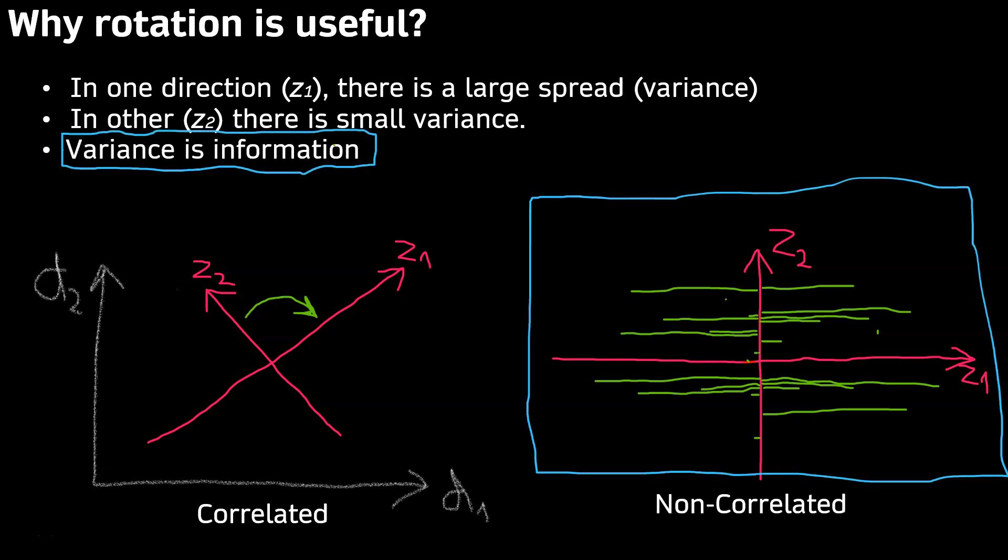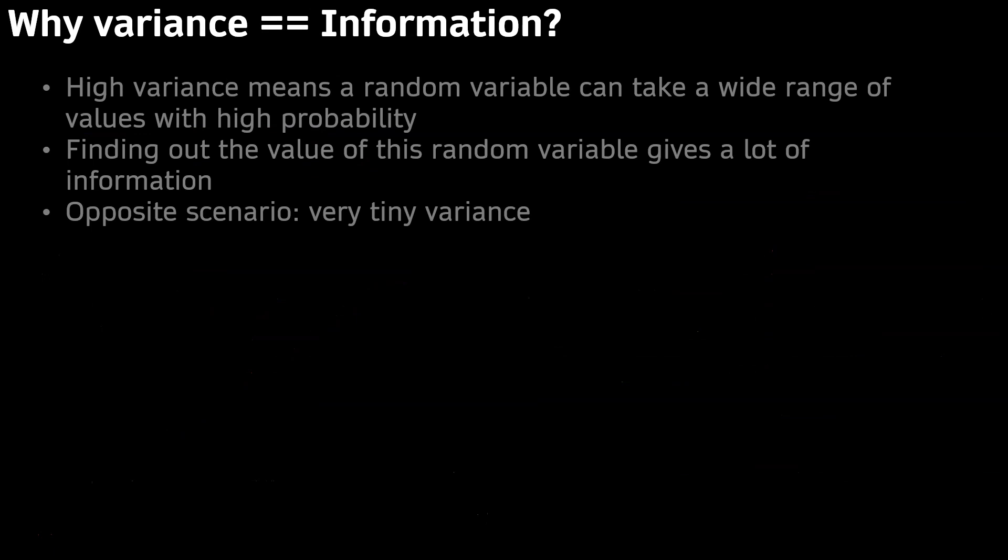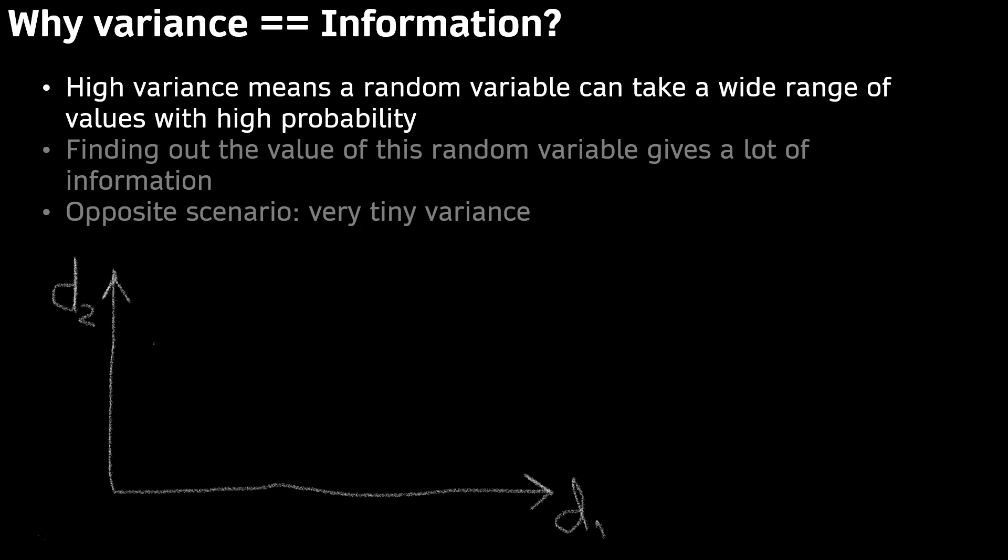Variance is information. And why does variance equal information? High variance means a random variable can take a wide range of values with high probability. Knowing the value of this random variable therefore gives a lot of information.